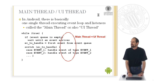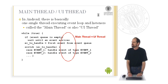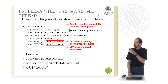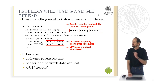In Android, there is basically one single thread which is responsible for execution of the event loop and the listeners. This thread is called the main thread or also the UI thread. The main thread always executes this endless loop by checking the events and executing listeners. There is a big problem when using this single thread: event handling must not slow down the user interface thread. So events must be read quickly from the event queue and the user interface thread may only spend little time in executing the event handlers.